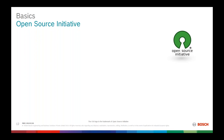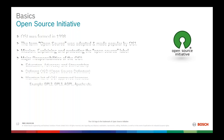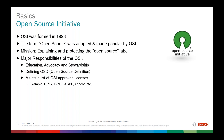The Open Source Initiative, OSI, was formed in 1998. The term 'open source' was adopted and made popular by OSI. The mission of OSI is to explain and protect the open source label. It was founded as an educational, advocacy, and stewardship organization to make open source popular, define the open source definition, and maintain a list of OSI-approved licenses — examples being GPL2, GPL3, AGPL, Apache, and so on.